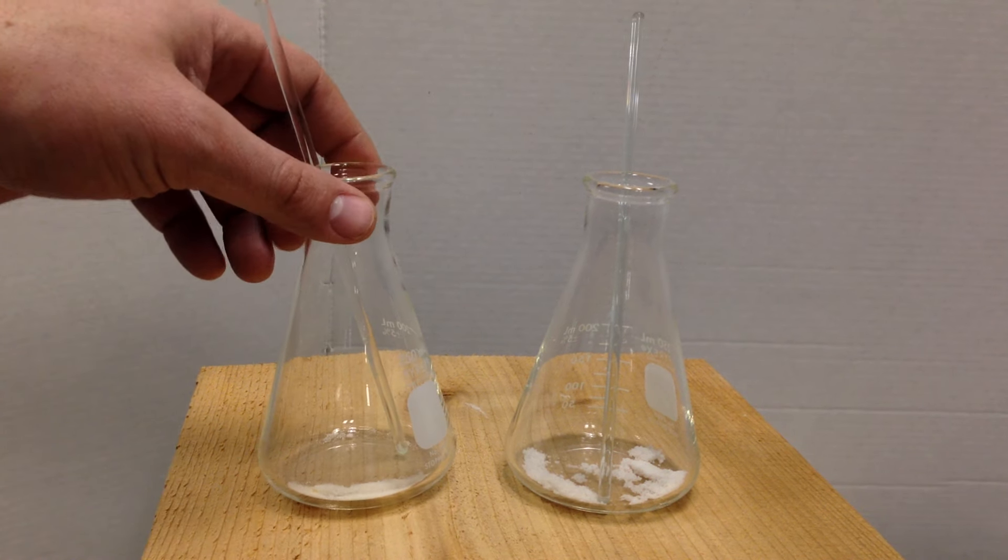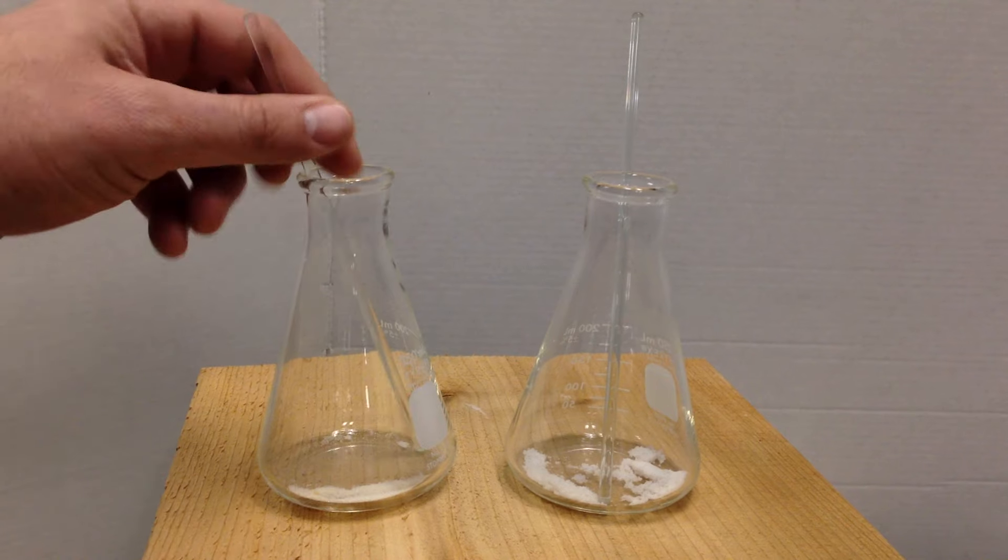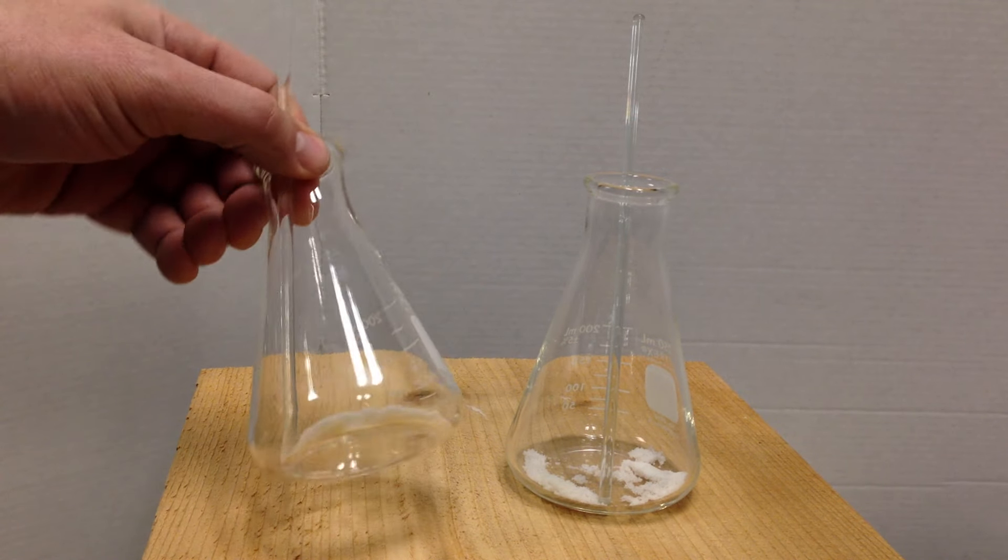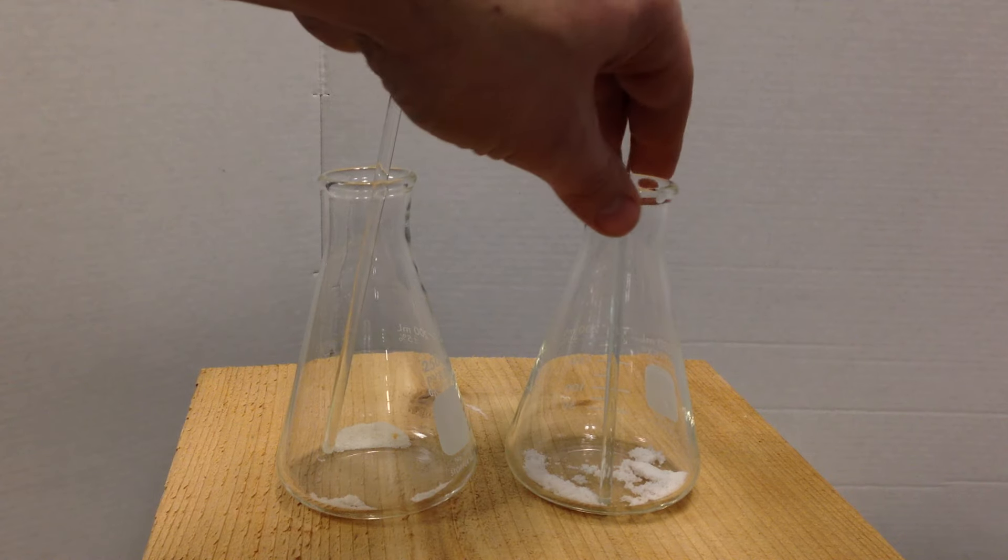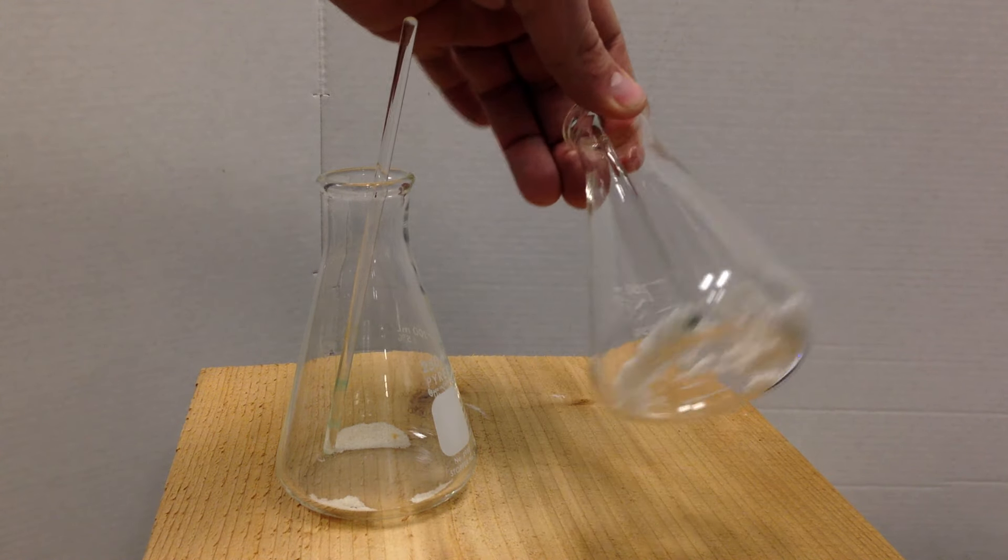What I have here is two Erlenmeyer flasks. One has lead nitrate solids in the bottom and one has potassium iodide solid or salts on the bottom.